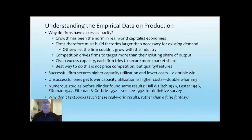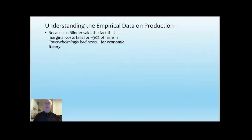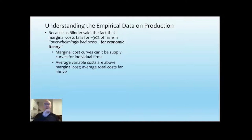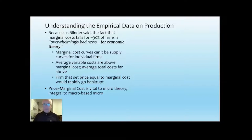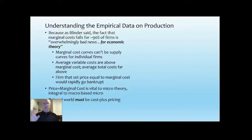Why do economics textbooks not teach the real world? Why do they teach the fantasy instead? It's because if you teach the real world, the neoclassical theory of a rising supply curve collapses — marginal cost can't be the supply curve for each individual firm. If they have falling marginal cost, variable cost is above marginal cost, and average total cost is far above again. Any firm that priced at marginal cost would be losing money hand over fist and would rapidly go bankrupt. But prices equalling marginal cost is vital to neoclassical micro theory about maximising the gap between total benefit and total cost.